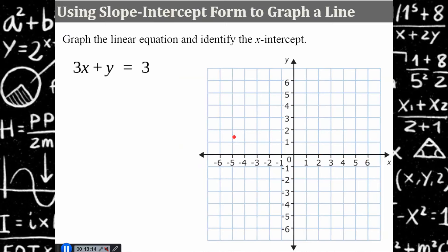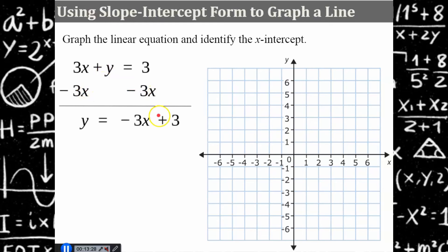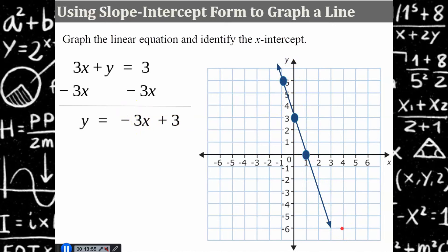Now let's review how to graph slope-intercept form. First, make sure the equation is in slope-intercept form — this one is in standard form, so solve for y by subtracting 3x from both sides. Now it's in slope-intercept form. Start by identifying that the y-intercept is 3 and plot that on the graph. Using the slope of negative 3: rise negative 3, run 1, plot a point; rise positive 3, run negative 1, plot another. The slope is negative so the line falls left to right, and the x-intercept is 1, where it crosses the x-axis.